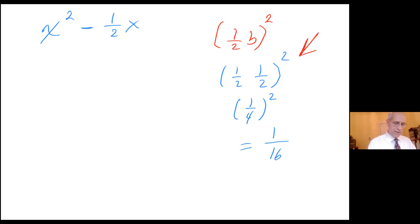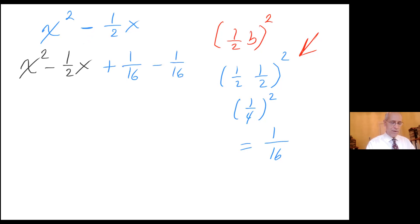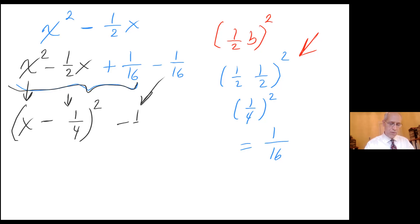So let me rewrite this as x squared minus one half x — that's my original expression. Then I'm going to add the magical number: plus one over 16. And let's balance it with minus one over 16, so we are not changing anything. Now using the first three terms: x minus one half of one half — one half of b always goes in here — one half of one half is one fourth, quantity squared. This encapsulates all of this, and then my minus one over 16.